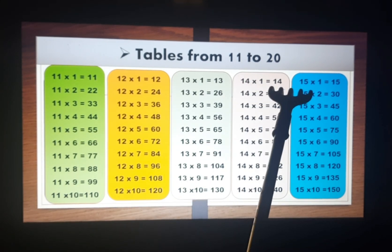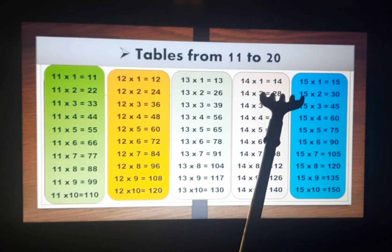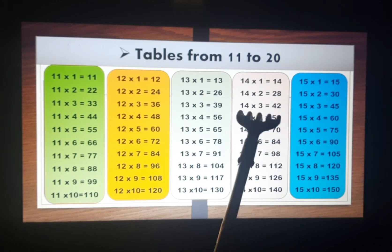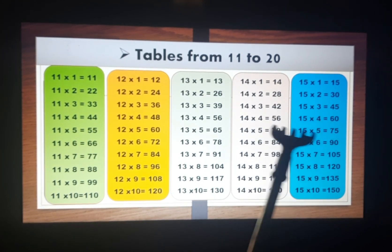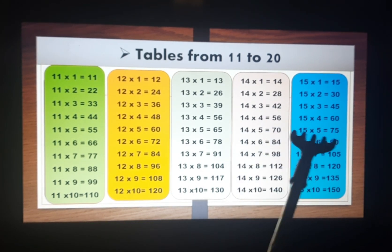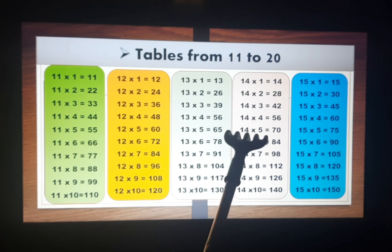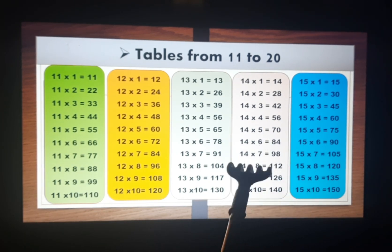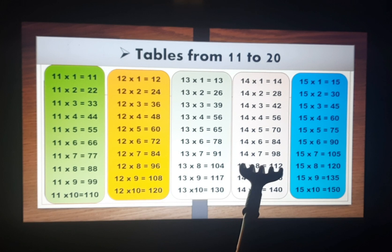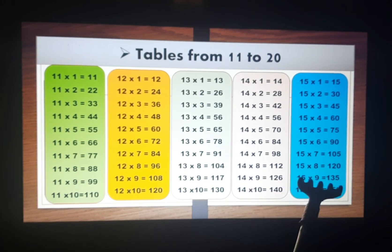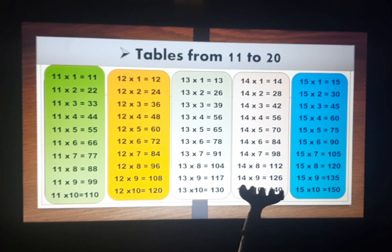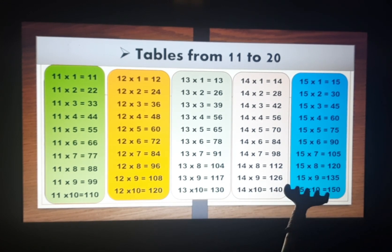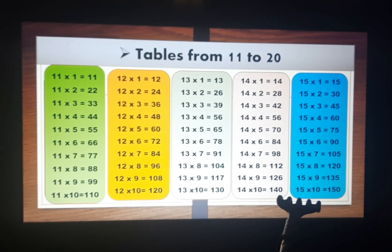Fourteen ones are fourteen, fourteen twos are twenty-eight, fourteen threes are forty-two, fourteen fours are fifty-six, fourteen fives are seventy, fourteen sixes are eighty-four, fourteen sevens are ninety-eight, fourteen eights are one hundred twelve, fourteen nines are one hundred twenty-six, and fourteen tens are one hundred forty.